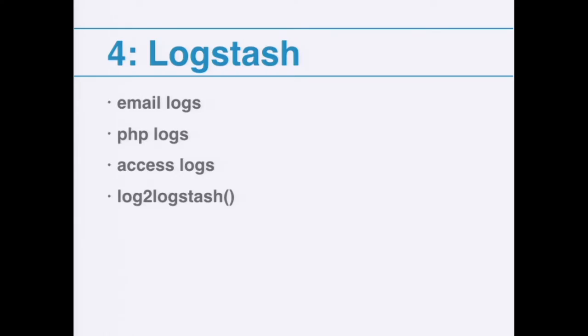The fourth use case is Logstash. Logstash is an additional open source project that works with Elasticsearch — it takes text logs and imports them into Elasticsearch, enabling you to search on those logs. I've seen this deployed for things like email logs, PHP logs, and access logs. We recently launched a function called Log2Logstash on WordPress.com, which enables us to take any arbitrary set of fields and stick them through Logstash into Elasticsearch. I was accused by our head of systems of using it as a hammer and hitting too many things with it.